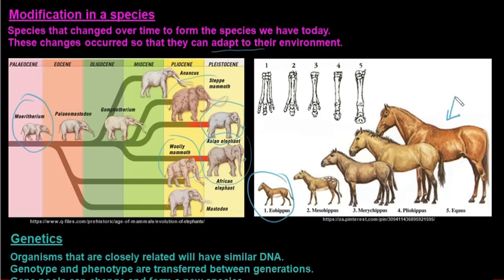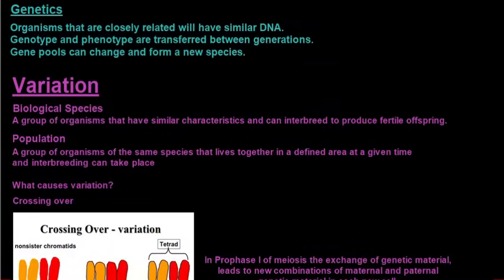Genetics is also evidence for evolution. Organisms that are closely related will have similar DNA. The genotype and phenotype are transferred between generations, and gene pools can change and form new species. When these new species form, we can look at the DNA. The more DNA they share, the closer related they are.